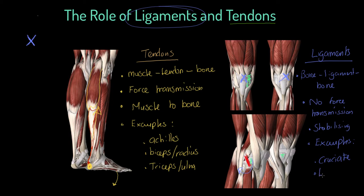We've also got what we refer to as lateral or medial ligaments. Lateral means on the outside of the body, so we'd have some here. Medial means on the inside or inner side facing inwards — so this would be the medial side. We often refer to lateral and medial ligaments.